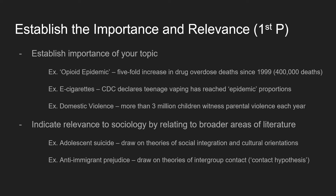If we were trying to indicate the relevance of our topic to sociology by relating it to broader areas of literature — let's say we were studying adolescent suicide — we might briefly highlight theories of social integration and cultural orientations. If we were studying anti-immigrant prejudice, we might draw on theories of intergroup contact, such as the contact hypothesis. These are a few examples of ways that we can establish the importance and relevance of our project topic.